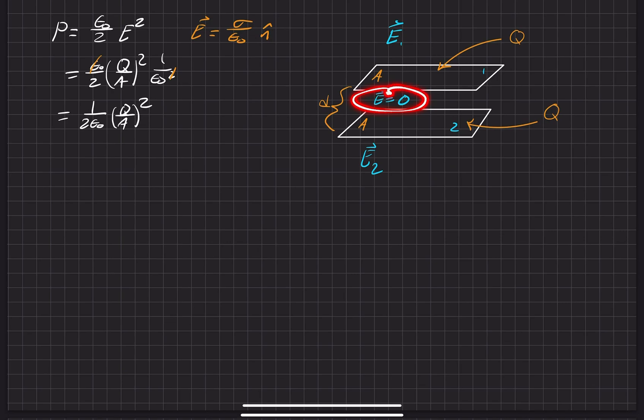For the pressure in the middle, there is zero pressure because there is zero electric field, so there's nothing trying to keep these plates together or push them away. The actual pressure is not pushing outward from the middle, but more of a pulling outward from the electrostatic pressure between the two plates. It's an interesting way to analyze this problem.